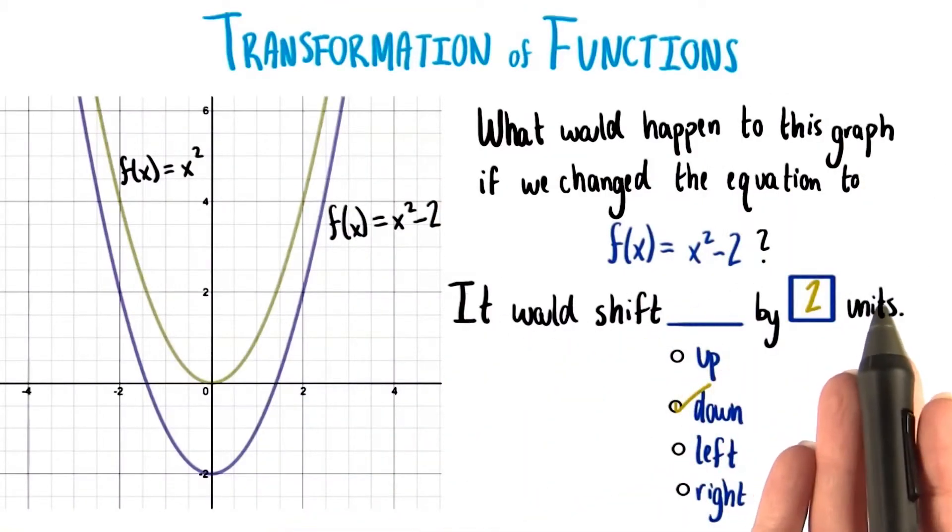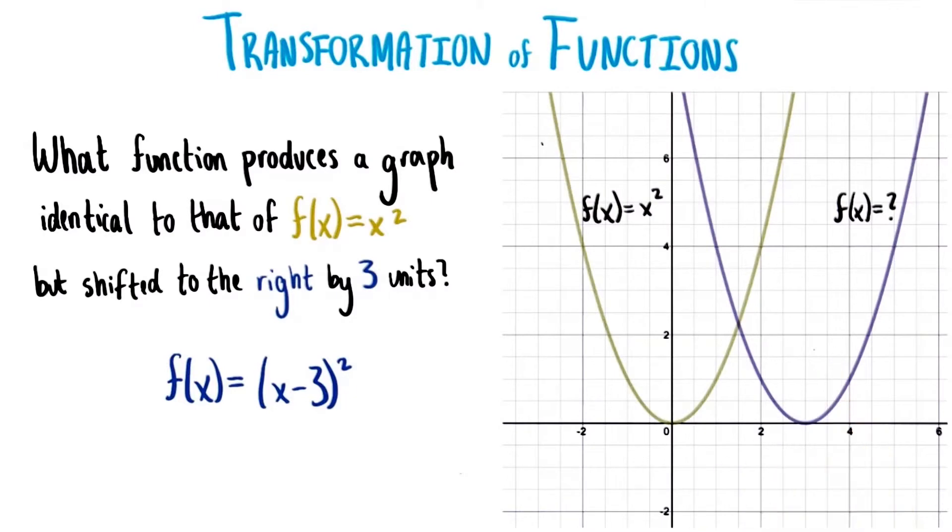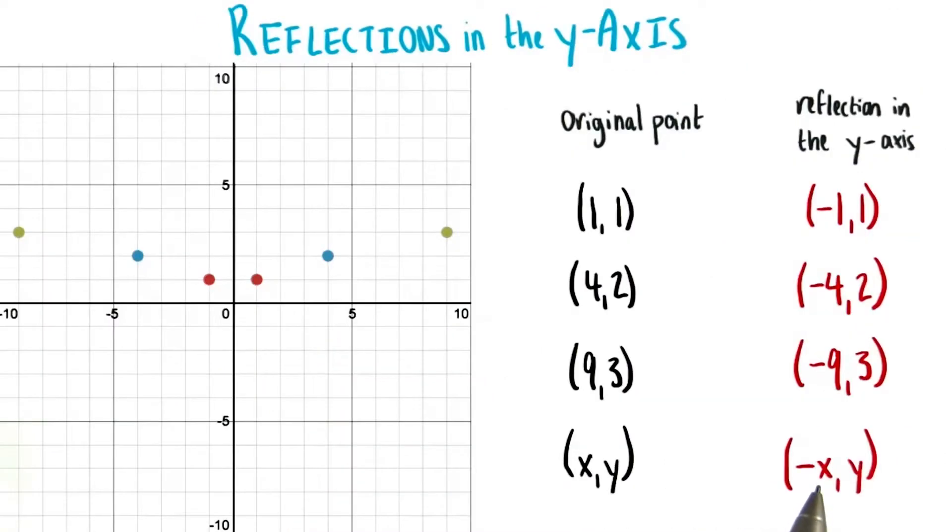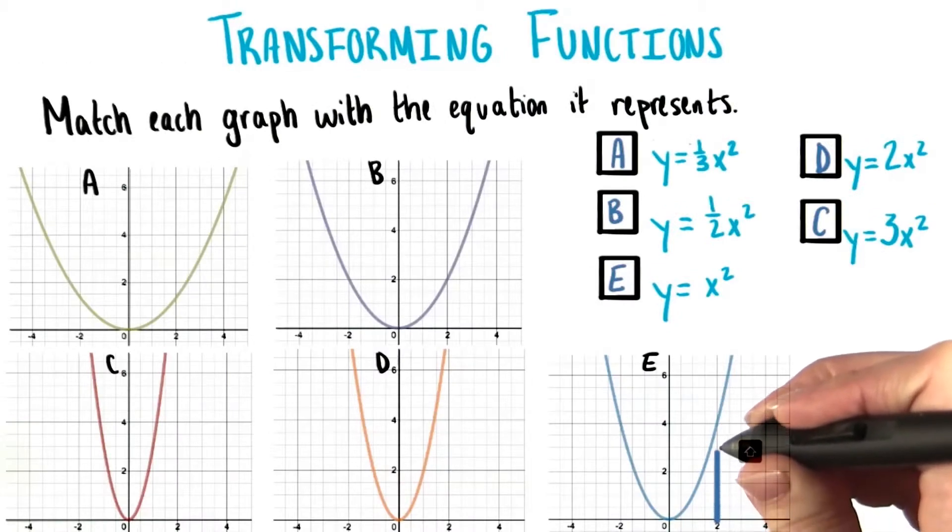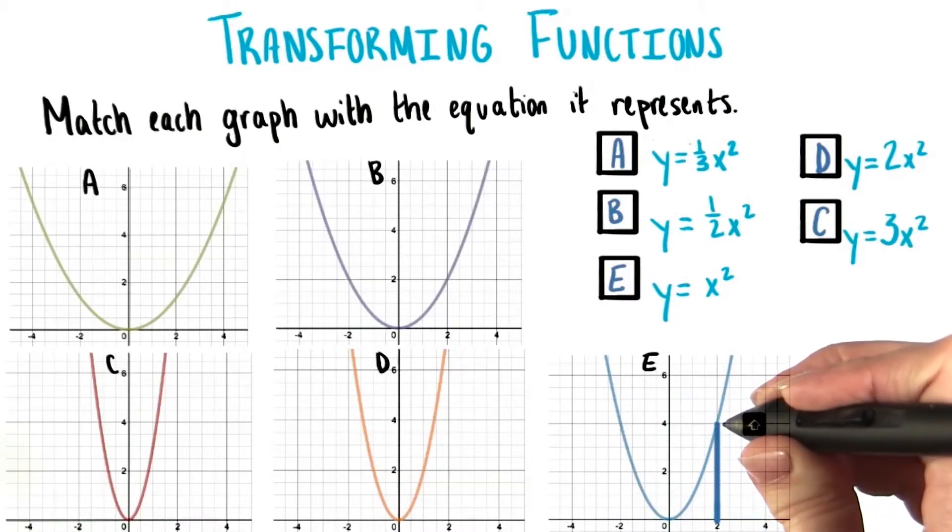Lastly, we explored transformations of functions. Rigid transformations include vertical and horizontal shifts, as well as reflections in the x and y axis. Non-rigid transformations, on the other hand, distort the shape of functions by stretching or shrinking them.